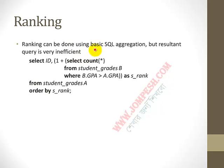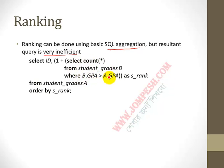Ranking can also be done using basic SQL aggregation, but the resulting query is very inefficient. The equivalent query is: select ID, (1 + (select count(*) from student_grade where GPA > s.GPA)) as rank from student_grade s order by rank.